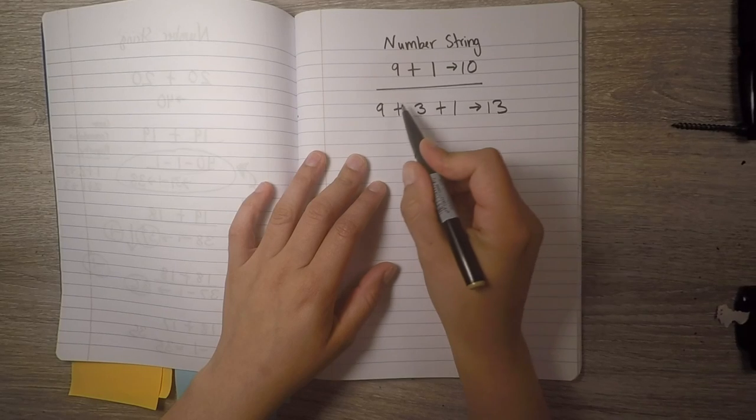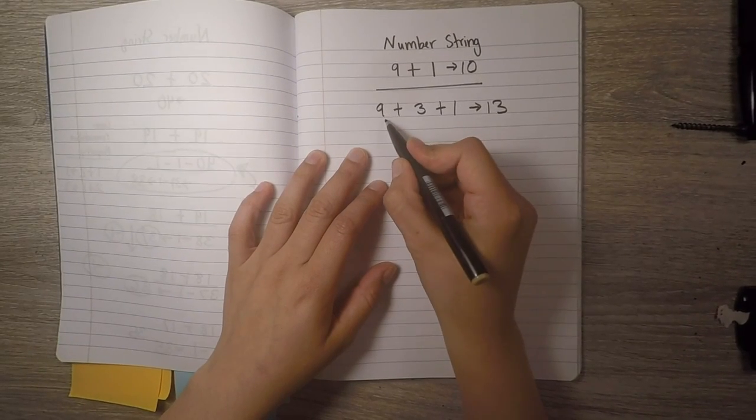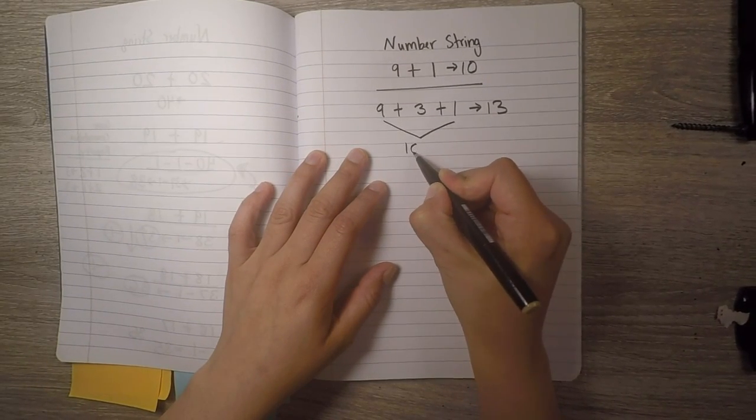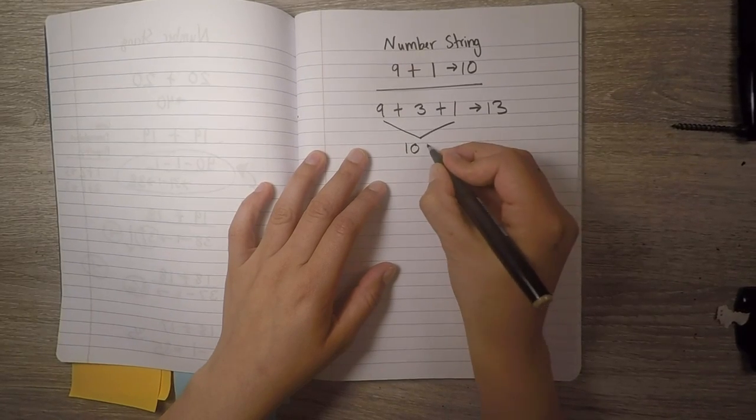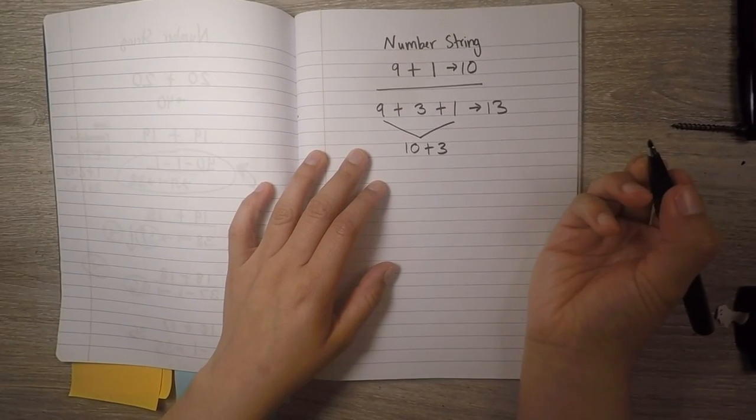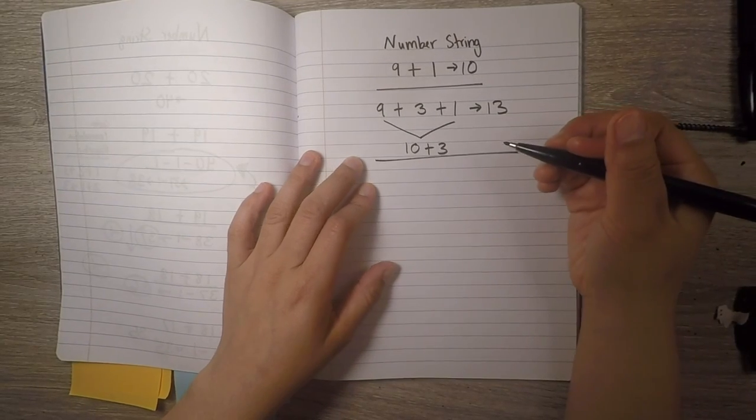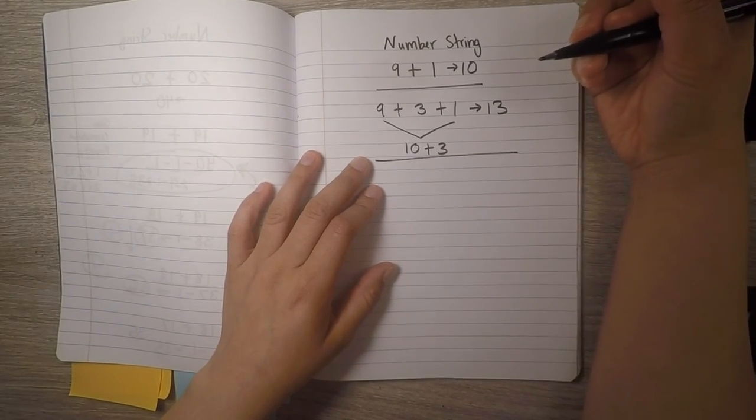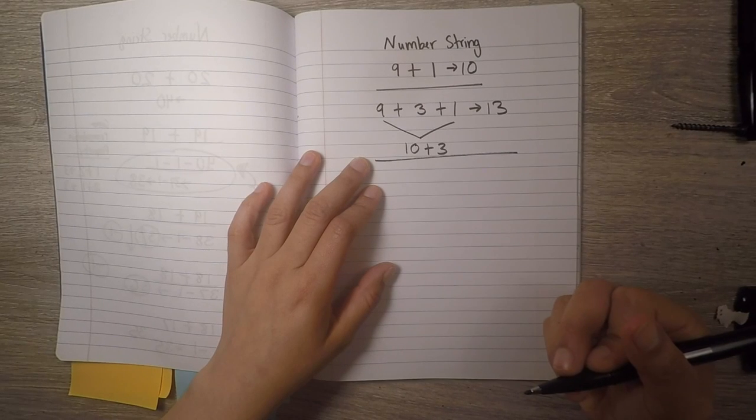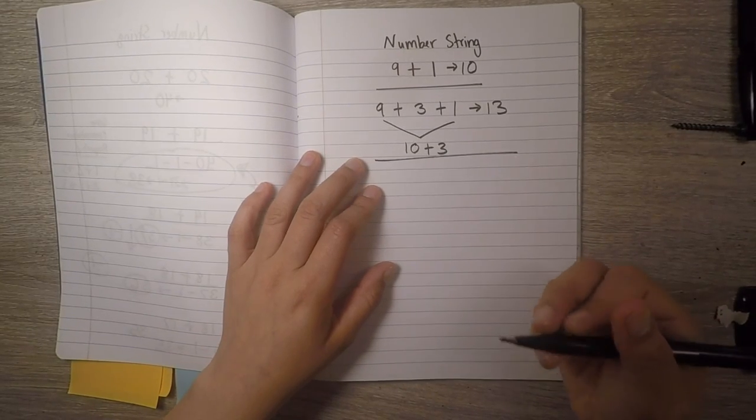So most of you probably use your knowledge of tens where you took the nine and the one. Remember, that makes a ten, and then just added three more. Great job, mathematicians. I did the next one. Again, we're just using our knowledge of the previous number sentence to make each one that follows next easier to solve.